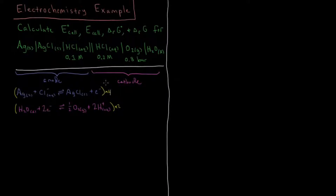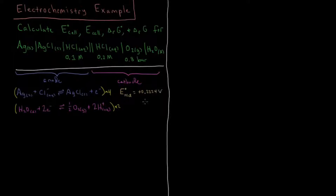So we have our oxidation times four and our reduction times two. For the standard reduction potentials: the standard reduction potential for the top half-cell (the Ag/AgCl reaction) is +0.2224 V, and the standard reduction potential for the cathode reduction — water going to O₂ and H⁺ — is +1.229 V.